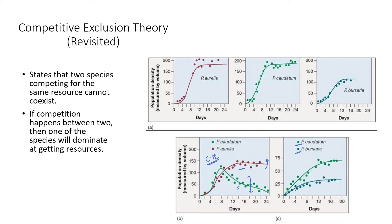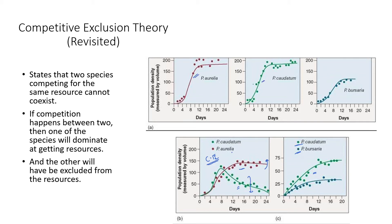When P. caudatum and P. bursaria interact, bursaria has a differential growth rate — very different from caudatum — so there is a chance they achieve coexistence. Coexistence is possible when species acquire resources in different ways: different timing, different growth rates, or different amounts. Even subtle differences give a chance for coexistence. If all characters are similar and they acquire the same resource, one will likely be excluded.